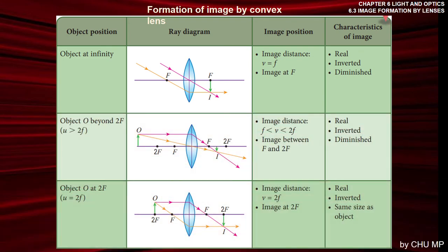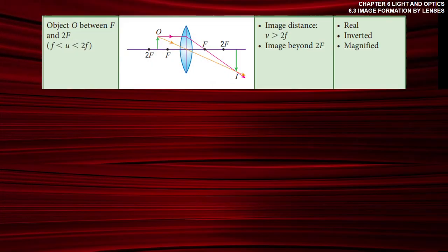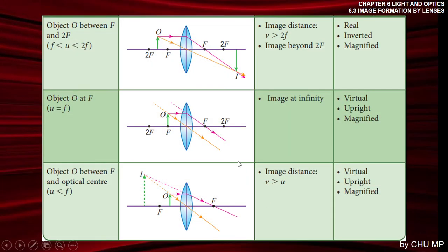Refer to the textbook page 256 for 6 ray diagrams for 6 different object positions with the corresponding image position and characteristics. For example, when the object is between F and 2F (u is bigger than F but smaller than 2F), the image forms beyond 2F (v greater than 2F), and the characteristics are: real, inverted, and magnified — real because object is on the left and image on the right; inverted because the image head is below; magnified because the image size is larger than the object.